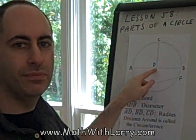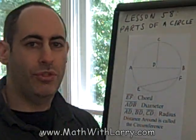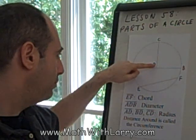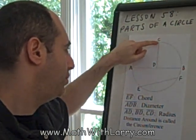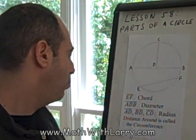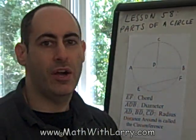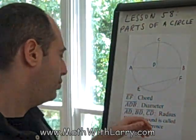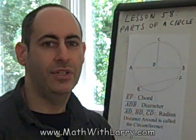Let's take a look at line segment AD. With AD, it starts along the edge of the circle but it stops at the center, and we call that the radius. The radius is basically the distance from the center to any point along the edge of the circle. CD is also a radius, and DB or BD is also a radius — we could draw an infinite number of radiuses. It's important to note that the radius is always exactly half the length of the diameter, since the diameter is actually two radiuses put together.